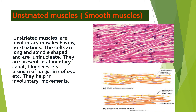The next is unstriated or smooth muscle. Unstriated muscles are involuntary muscles having no striations. The cells are long and spindle shaped and uninucleated. They are present in the alimentary canal, blood vessels, bronchi of the lungs, and the iris of the eye. They help in involuntary movement.